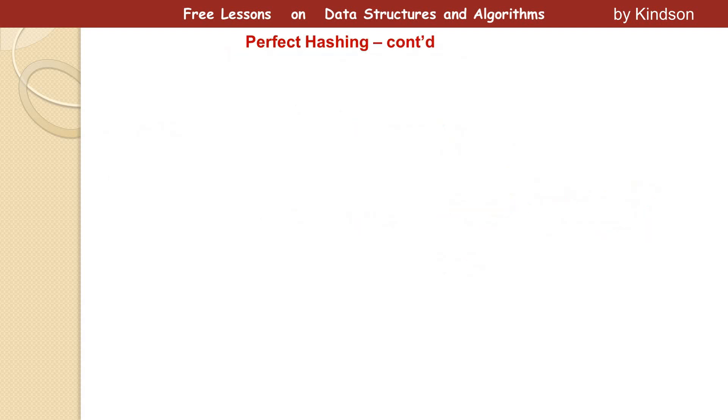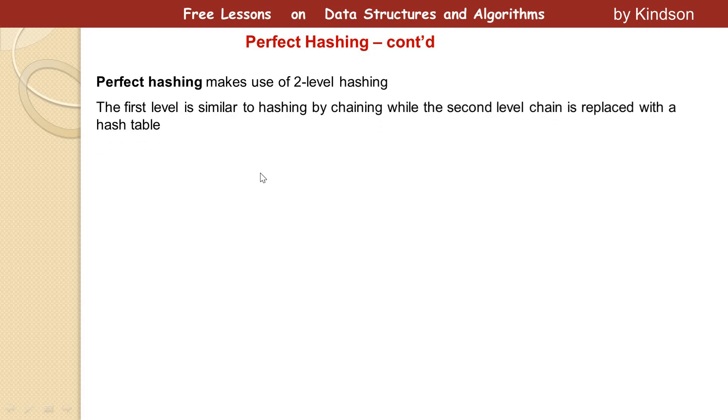We're going to move on to see how exactly perfect hashing works. Perfect hashing makes use of two-level hashing. You have level one and level two. The first one is h1 and the second one is h2. The first level is similar to hashing by chaining, which means you hash items into the hash table.